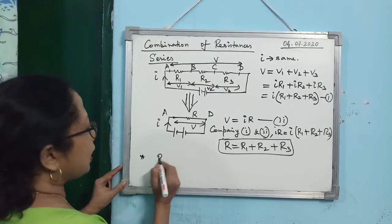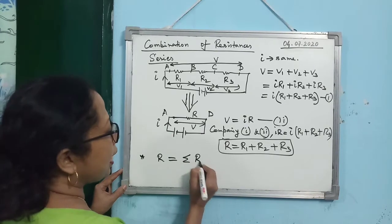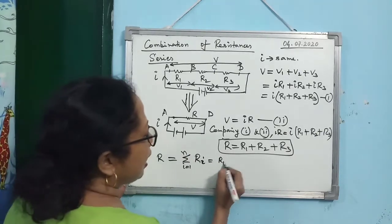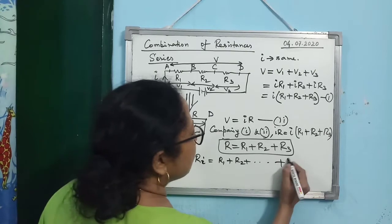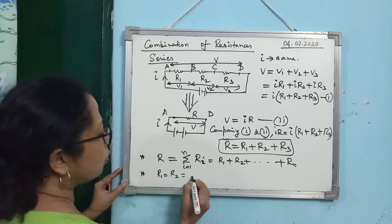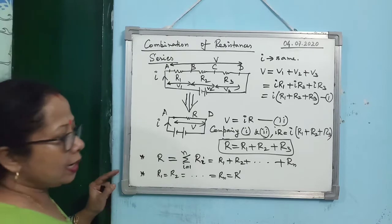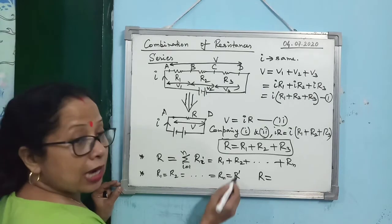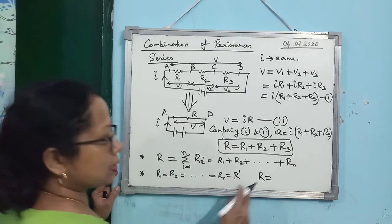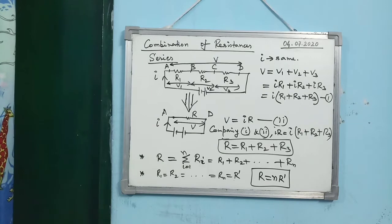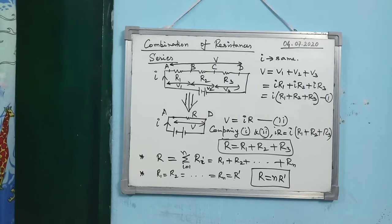For N resistances in series, the equivalent resistance is R = Σ Rᵢ (i = 1 to N), which expands to R₁ + R₂ + ... + Rₙ. If all N resistances are equal to R', then the equivalent resistance is R = NR'. For series connection, equivalent resistance is always greater than any individual resistance.